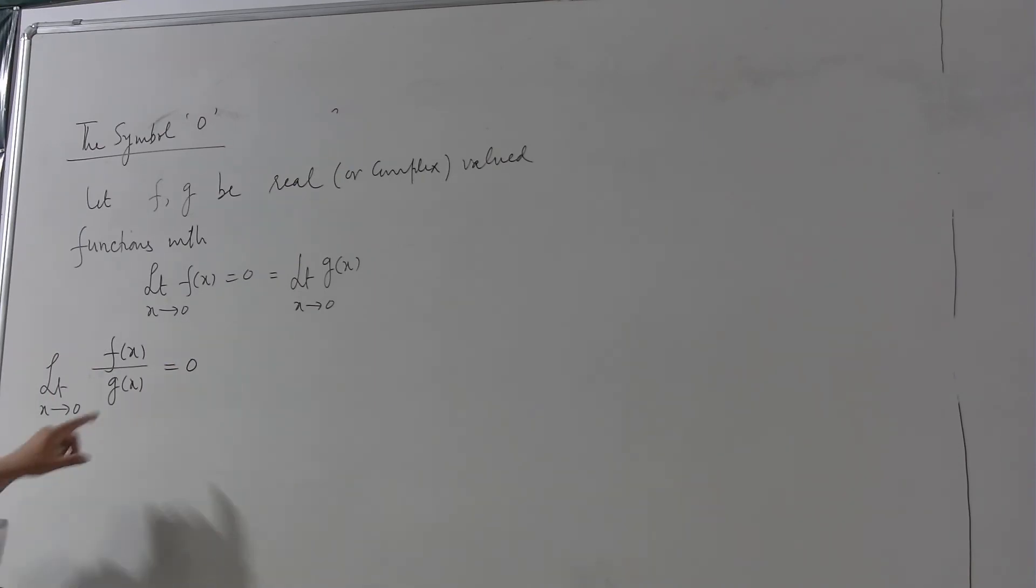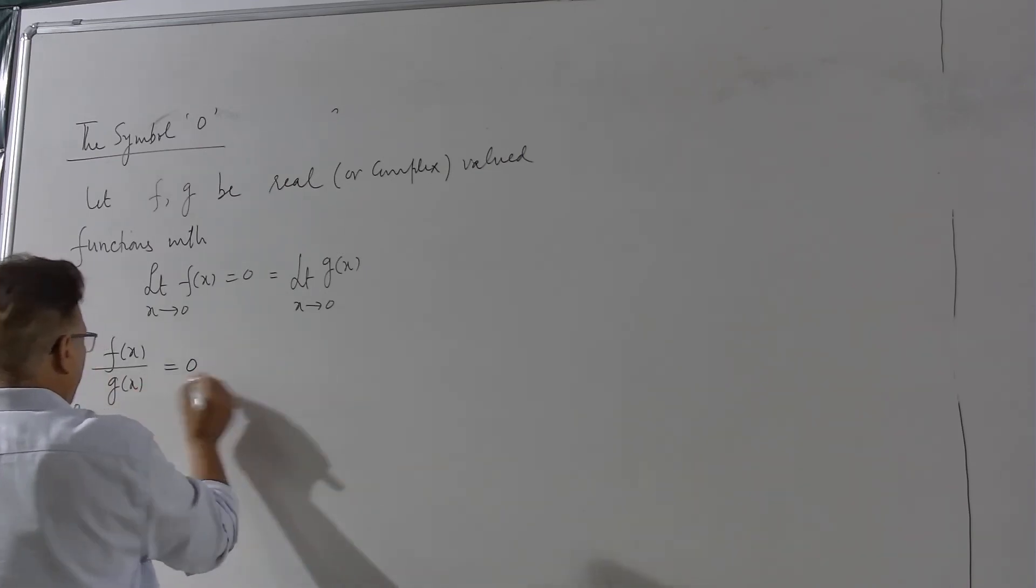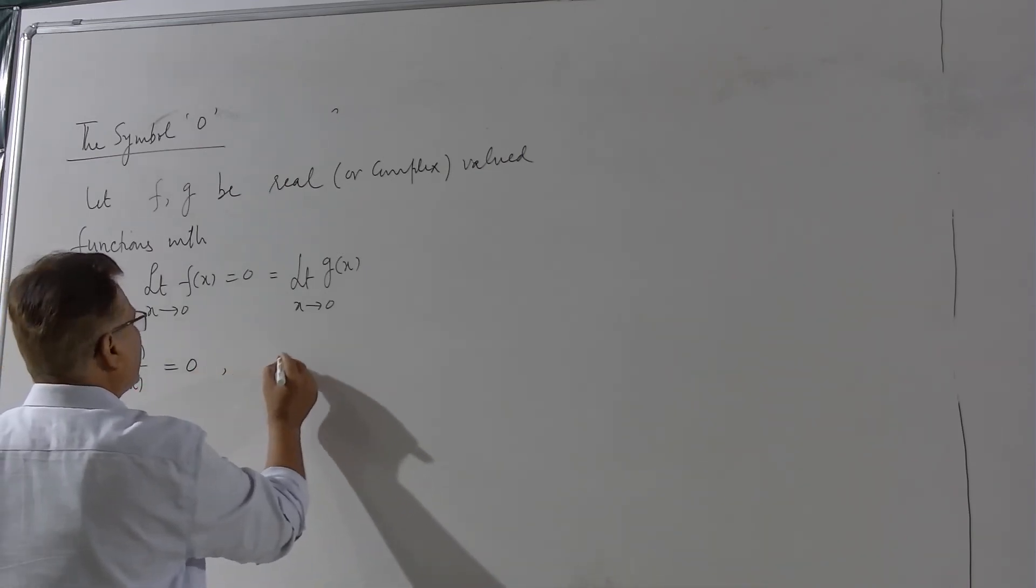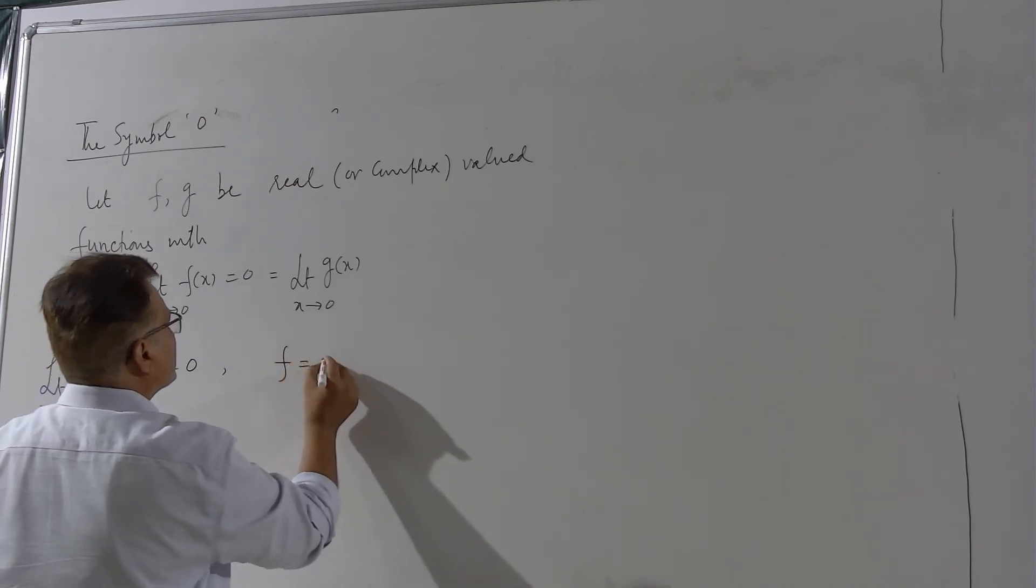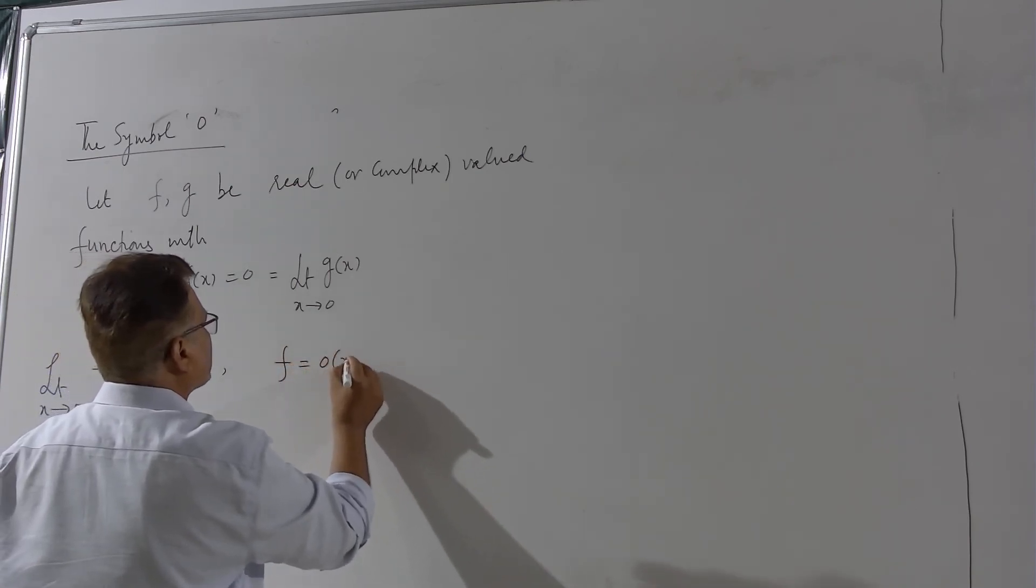Whereas if g approaches to 0 faster than f then the limit of this quotient will be infinite. Now in the first case, this fact is stated by writing that f is little o of g.